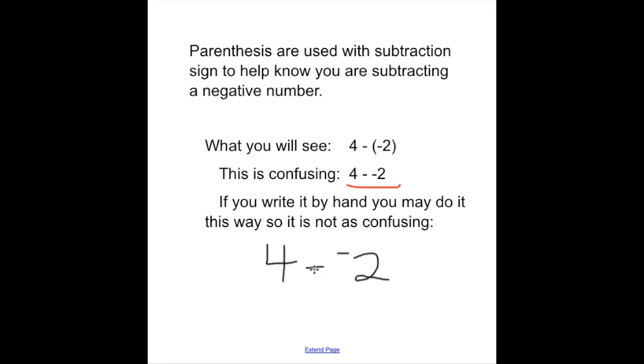So I have the 4, I have the minus sign like usual, and then my negative sign I just raise a little bit and make it smaller than my subtraction sign to show that it's a negative 2. So this top version here is one way we can do it, or you can do it this way. It's your preference, but whenever you do a textbook or something on the internet or on a paper that's a worksheet or something, you will see it like this.